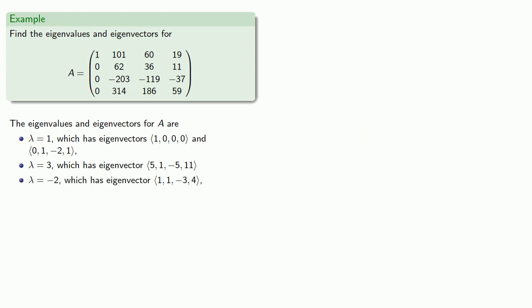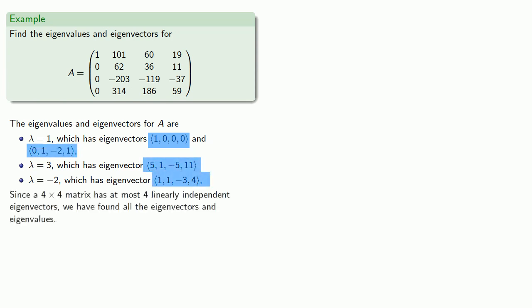And now we have 1, 2, 3, 4 eigenvectors. And since a 4 by 4 matrix has at most 4 linearly independent eigenvectors, we've found all of the eigenvectors and all of the eigenvalues. But before we celebrate too much, we should keep in mind that this only worked because we actually had 4 linearly independent eigenvectors.